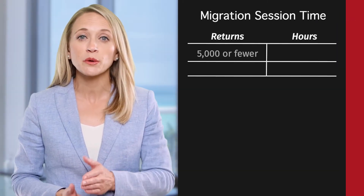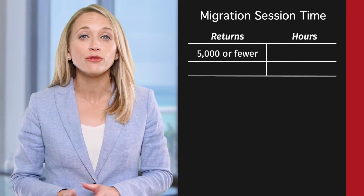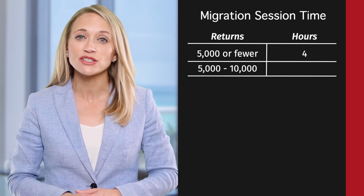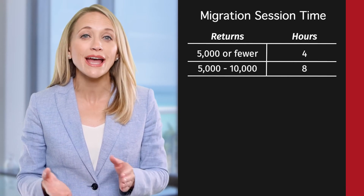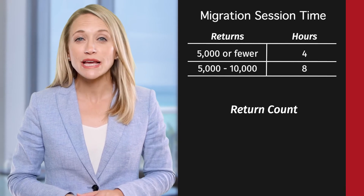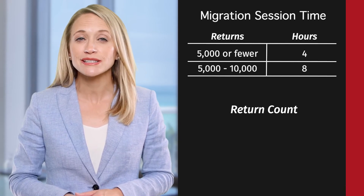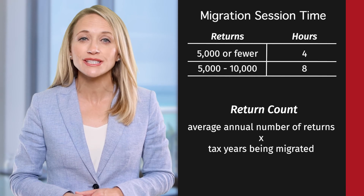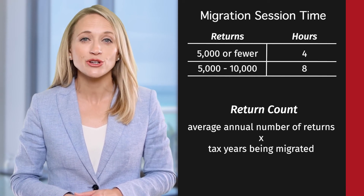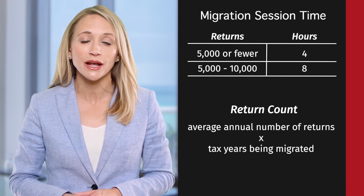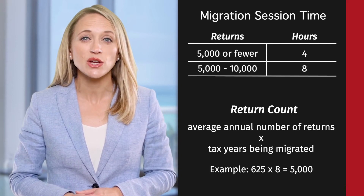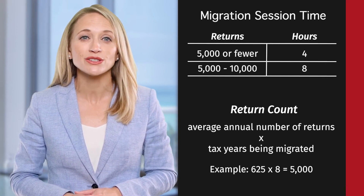5,000 or fewer returns will be scheduled for 4 hours. Between 5,000 and 10,000 returns will be scheduled for 8 hours. The number of tax returns is estimated by multiplying the average annual number of returns times the number of tax years being migrated. For example, 625 average number of returns times 8 years equals 5,000 returns.